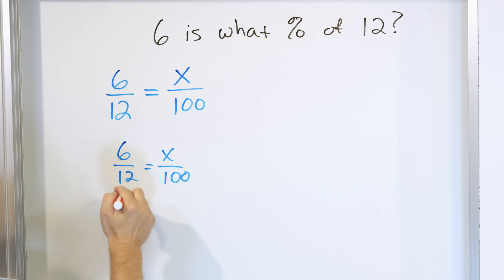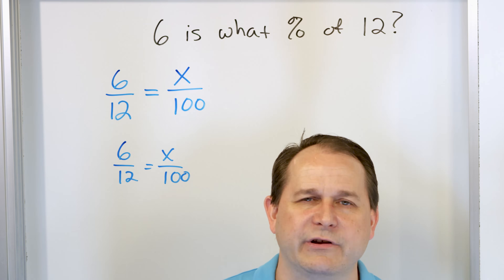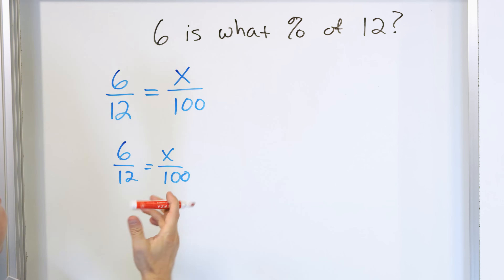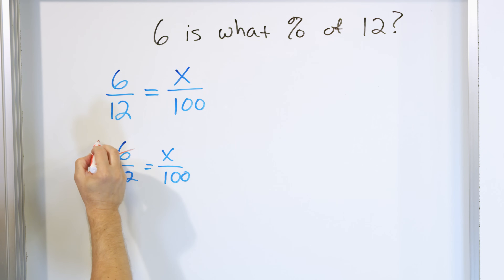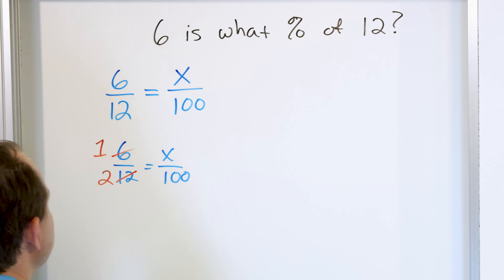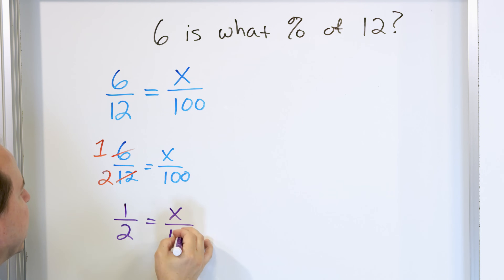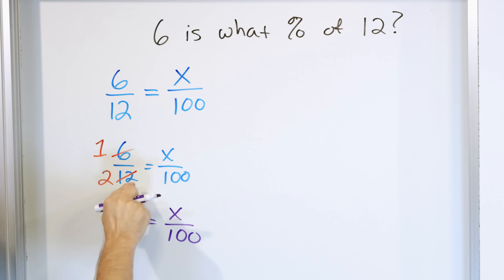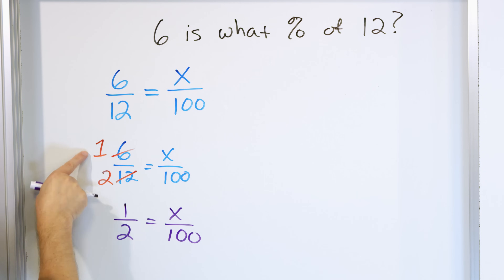Six out of 12 — we can already simplify this fraction. Any fractions you can simplify ahead of time will make all the calculations easier, so I always want you to try to do that. I can divide the top and bottom both by six. Six divided by six is one, and 12 divided by six is two. So what I really have is a new related problem where the new numbers are one out of two, equal to x out of 100. This is exactly the same because six over 12 is the same thing as one half — it's the same ratio. So replacing it with one half doesn't change anything.